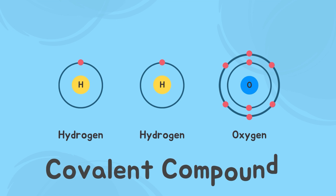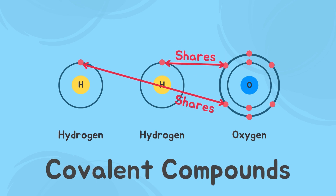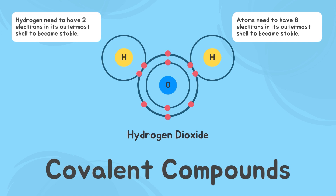Covalent compounds are created when one element shares its electrons with another element. The valence electrons are shared in pairs. An example of a covalent compound is water. The compound of water has two hydrogen atoms and one atom of oxygen. Since oxygen needs two valence electrons in its outermost shell, each of the two hydrogen atoms shares one electron with the oxygen atom in order to make water. This allows the hydrogen atoms to have two electrons in their shell and be stable, and the oxygen atom to have eight electrons in its outermost shell to become stable as well.